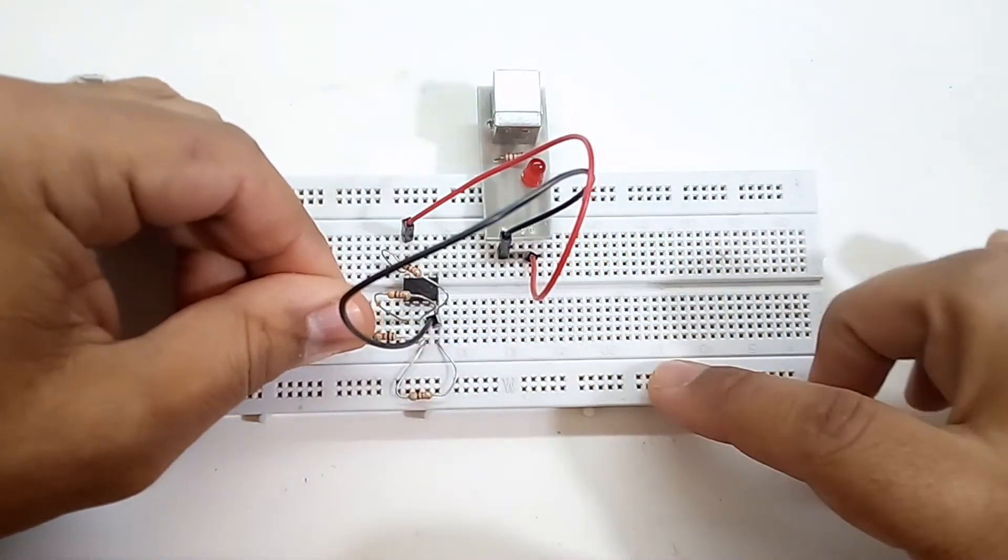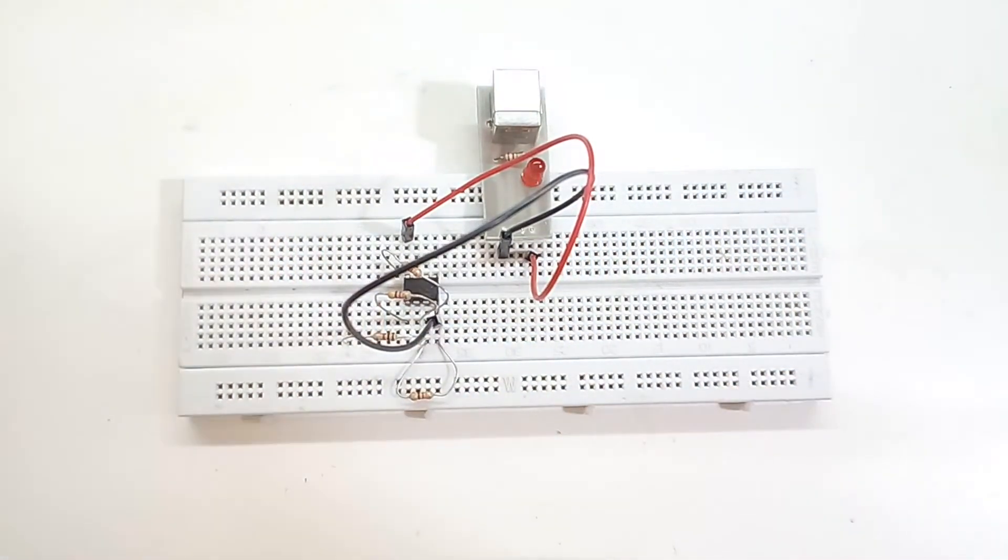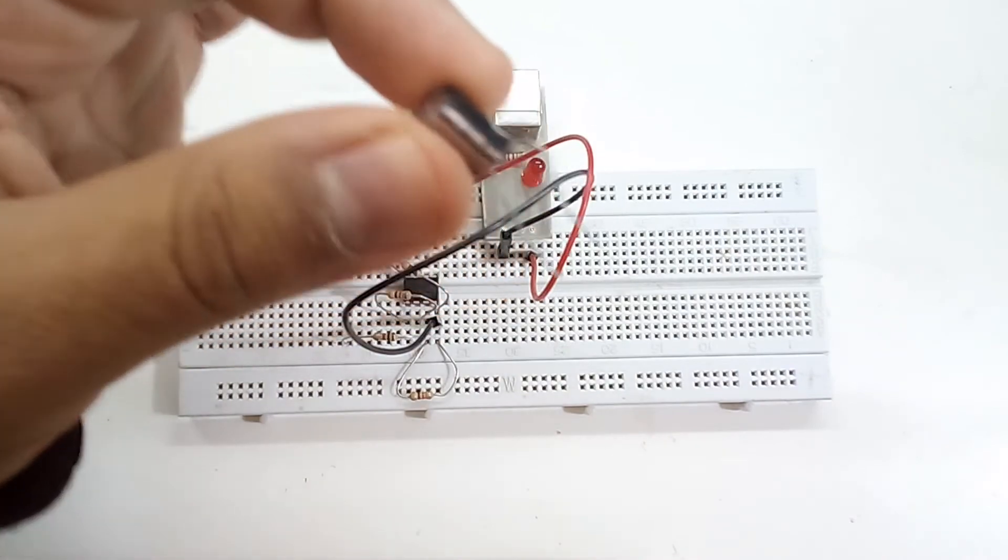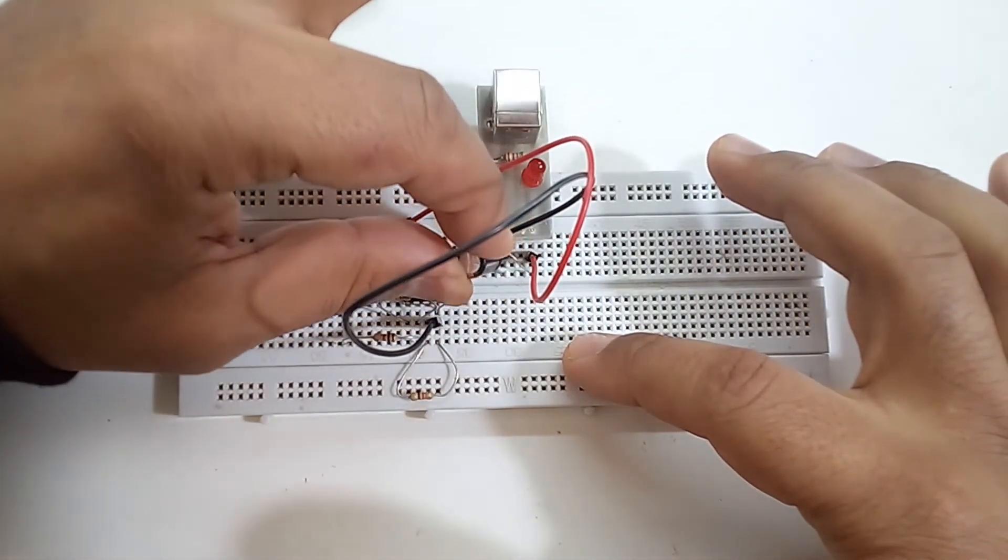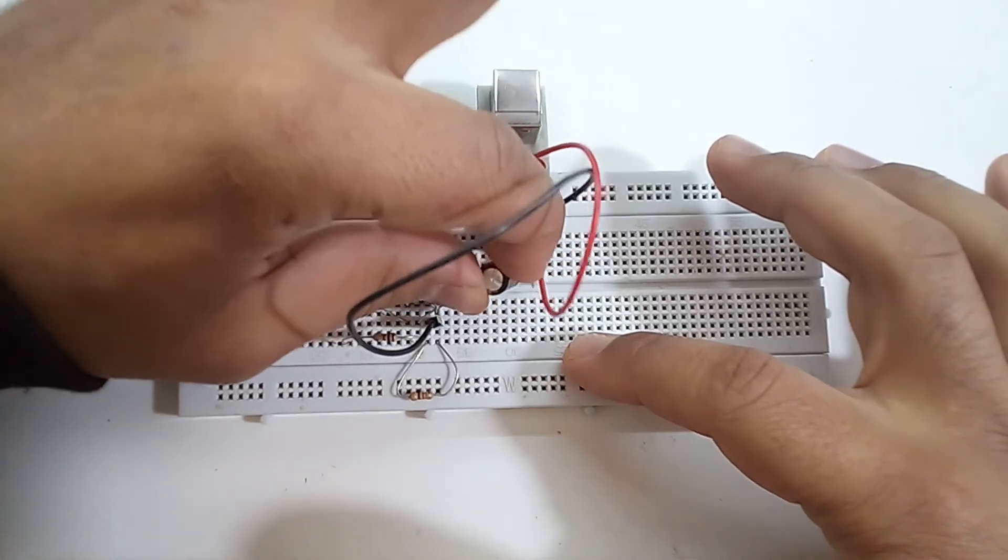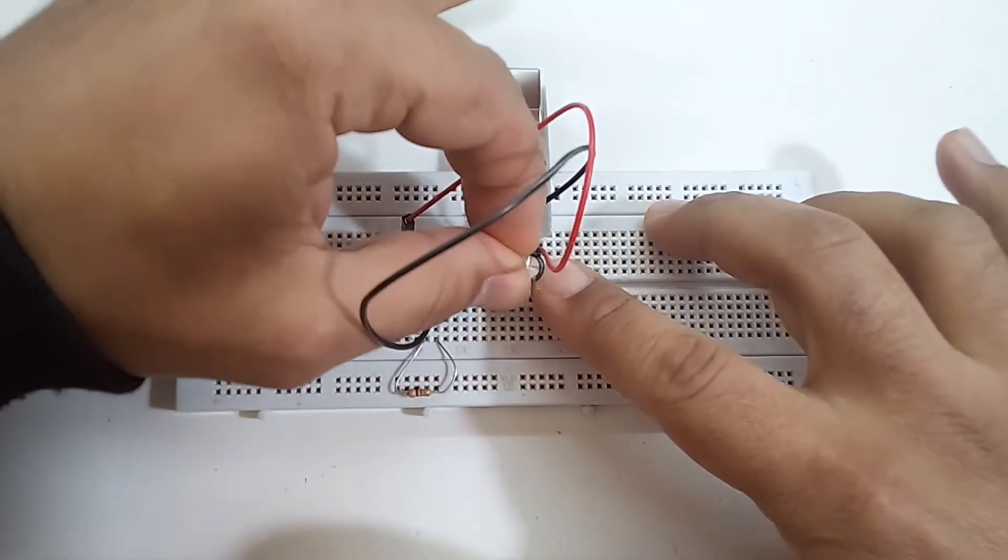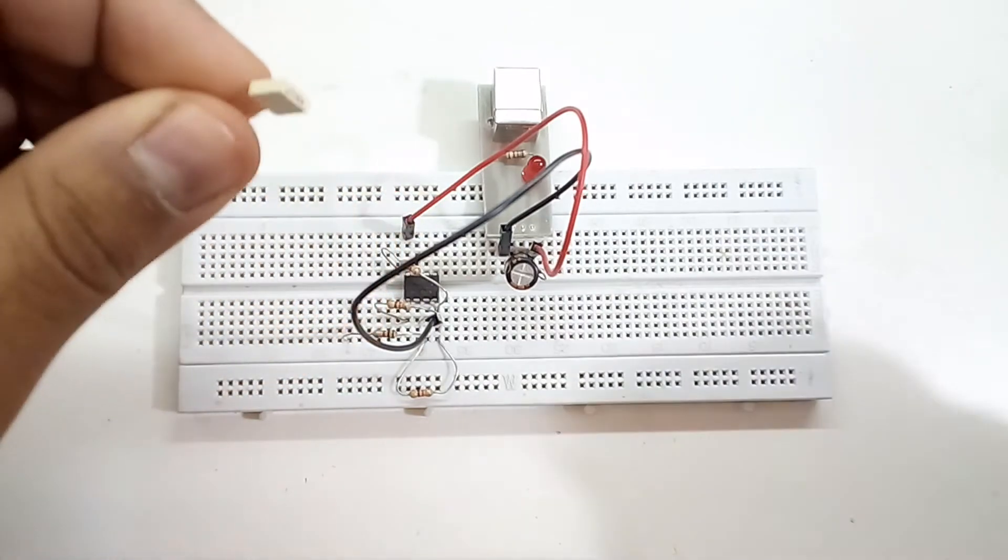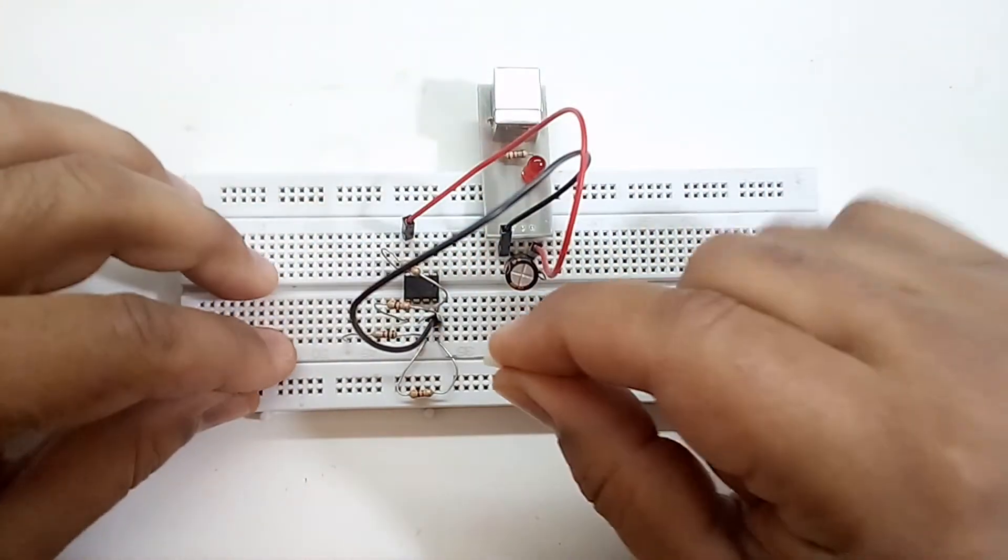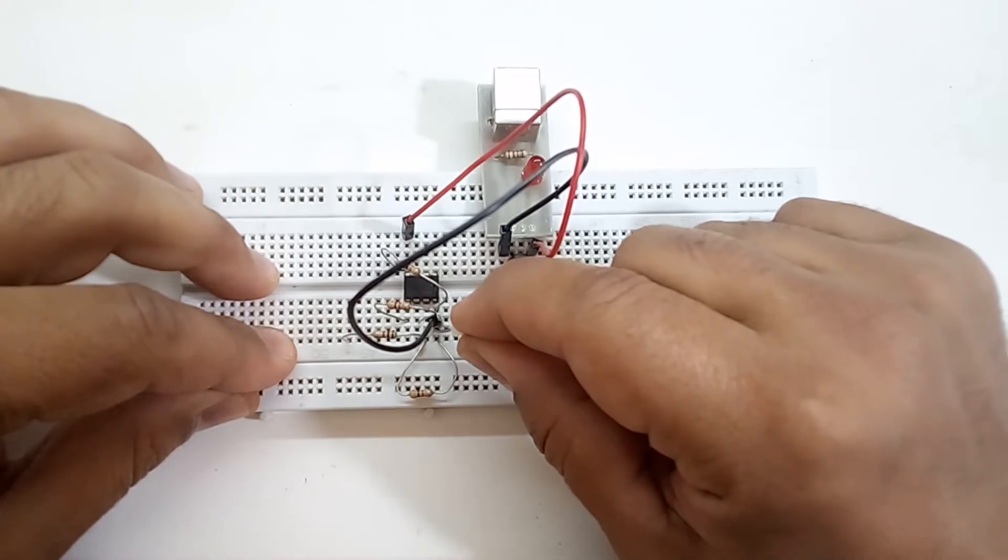After that we connect the terminals of a 100 microfarad electrolytic capacitor between the terminals of the power supply. Make sure you don't invert the terminals of the capacitor because it may explode. Then we add a 100 nanofarad capacitor between pins 3 and 4 of the op amp.